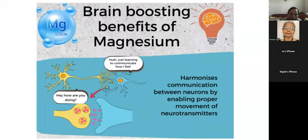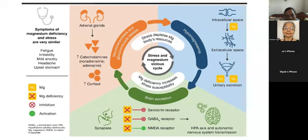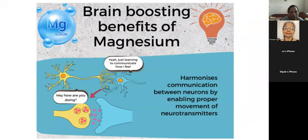Basically, stress and magnesium deficiency form a vicious cycle. If a person is very much stressed out, it means cortisol levels are quite high, and this results in depleting the stores of magnesium in your body. You might face symptoms like fatigue, irritability, and headaches. It's very important to notice these symptoms in your body and get a routine vitamin and minerals check. Magnesium plays a very important role in boosting your brain — it enables movement of neurotransmitters like GABA between neurons.